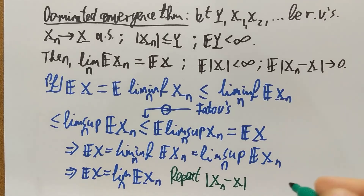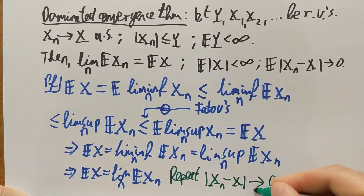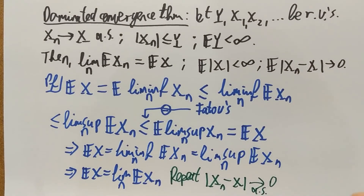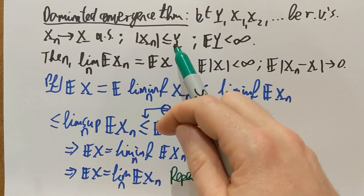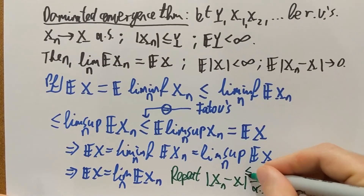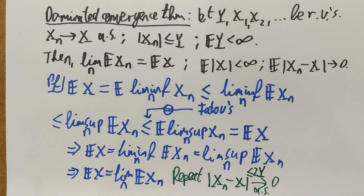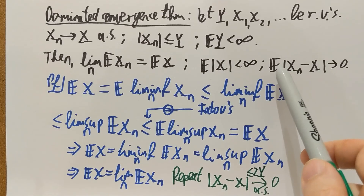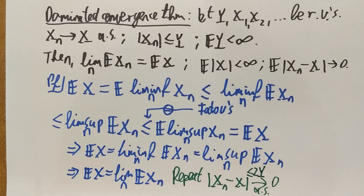Why can I repeat the argument on this random variable under the absolute value? First, if Xn goes to X almost surely, then |Xn − X| converges to zero almost surely. By the triangle inequality, |Xn| ≤ Y almost surely, and the almost sure limit X also satisfies |X| ≤ Y. So |Xn − X| ≤ 2Y, which still has a finite expectation. Everything we did before still applies, and therefore the almost sure convergence of |Xn − X| to zero can be brought under the expectation — we conclude that E[|Xn − X|] also goes to zero. That's the end of this proof.